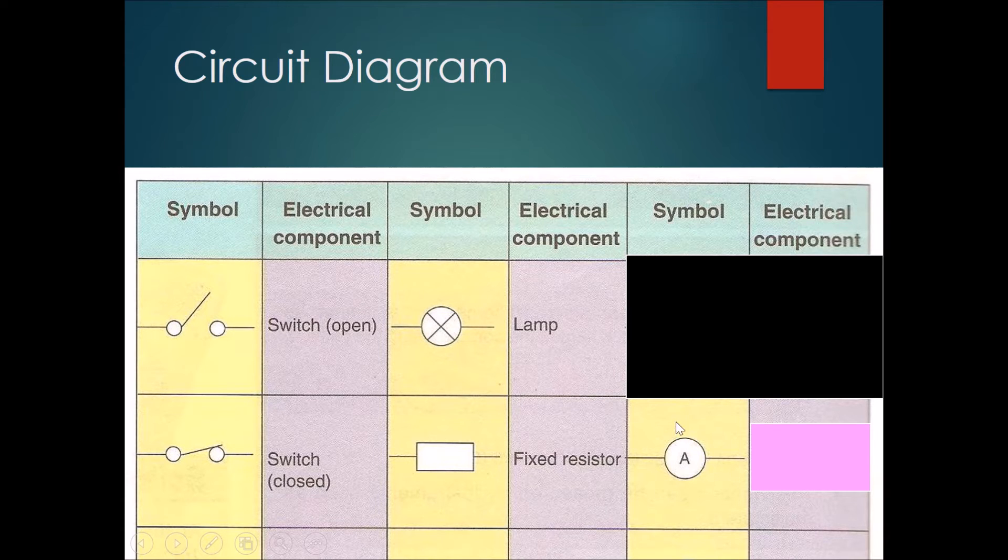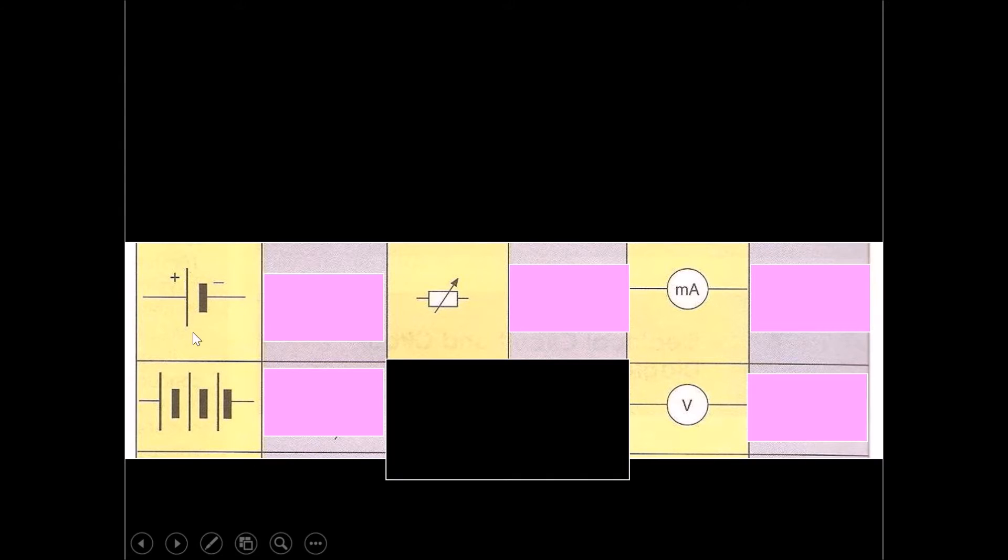If there's a circle and an A inside, this would be an ammeter. Over here, if there's a big line and a small line, and there's a plus sign and a minus sign, this would be an electric cell. This plus sign and minus sign may not be present, however the big line and small line should be significant enough.